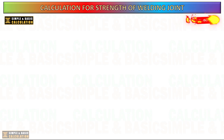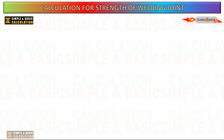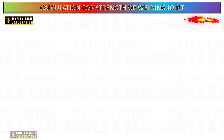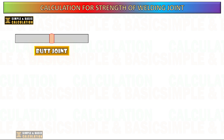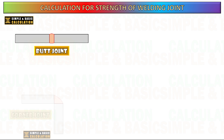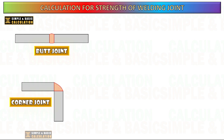Welding joints are the configurations of how two or more metal parts are connected or assembled before welding. Different types of welding joints are used based on the structure, application, and strength requirements of the welded structure. Here are the primary types of welding joints.